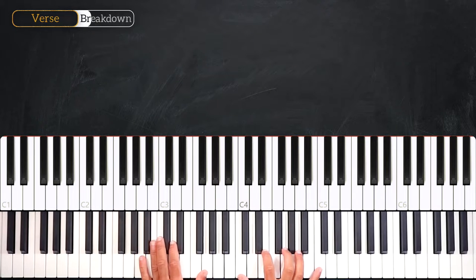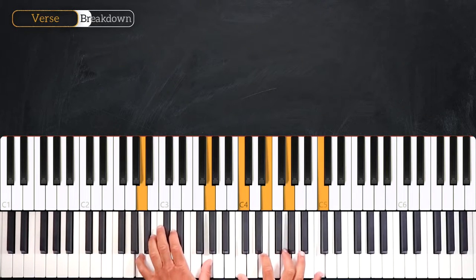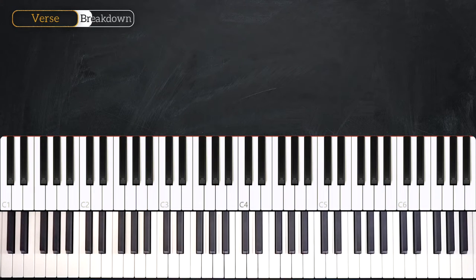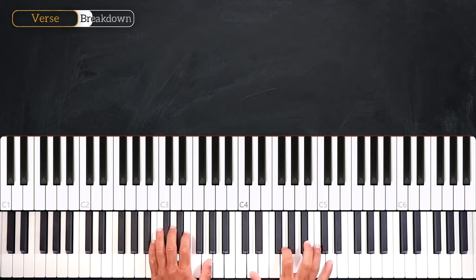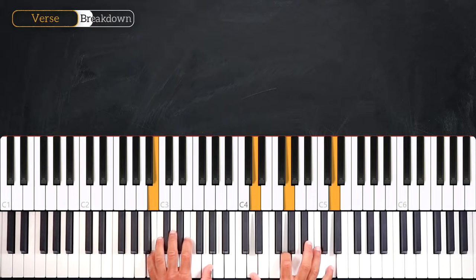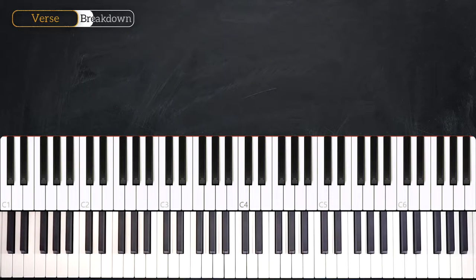Then we have this A minor 7. Then we get to play this G over B. And we finish on the D9.